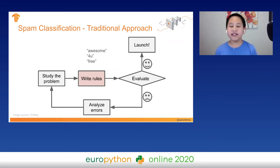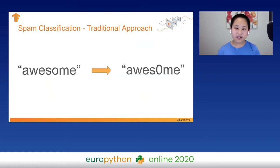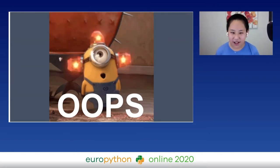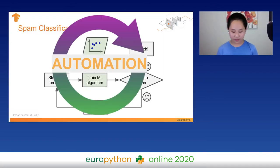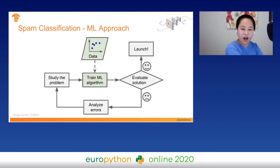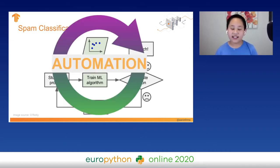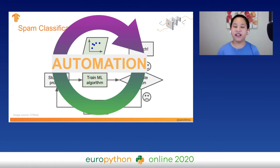We evaluate that approach and if it's good, we launch it; if bad, we write more rules. But what if a spammer changes the O in 'awesome' to a zero? Our traditional rules fail. This is why we should use machine learning. Once we study the problem, we train our machine learning algorithm on the data. And the reason we use machine learning is that it can be automated — so if a user reports an email as spam, as long as we get new data, we can automatically retrain our model to get even better results.